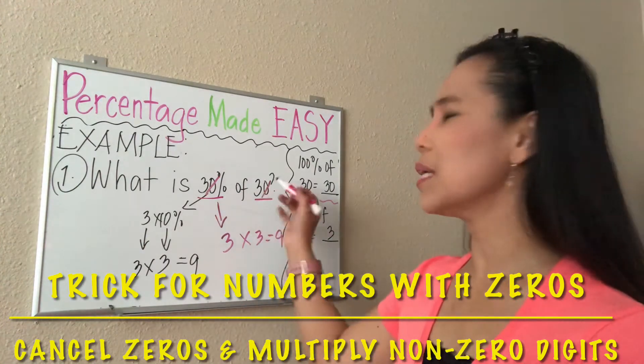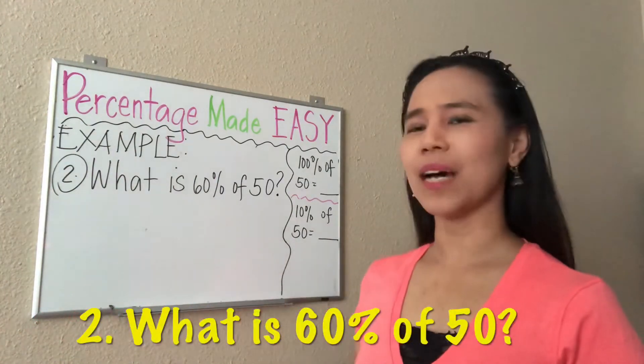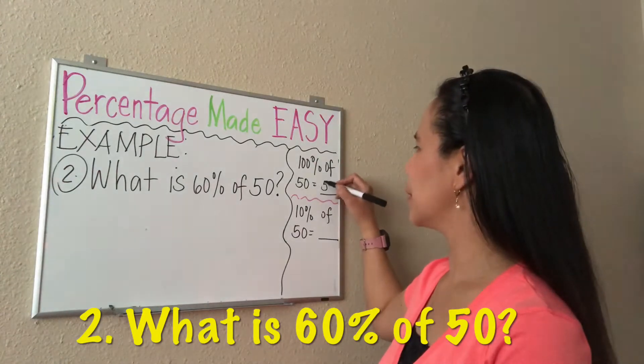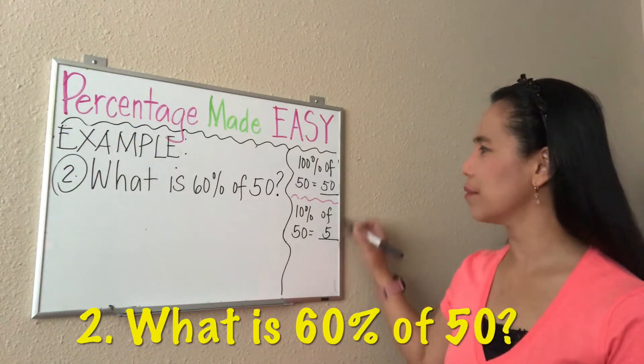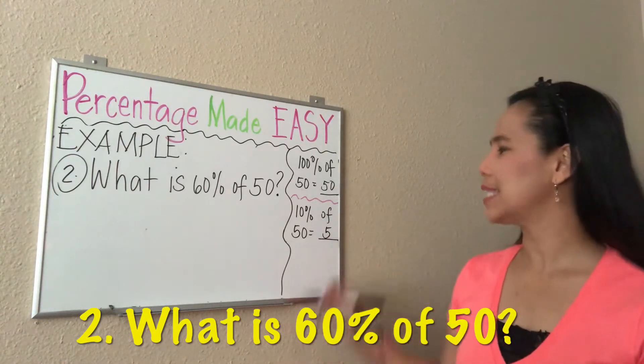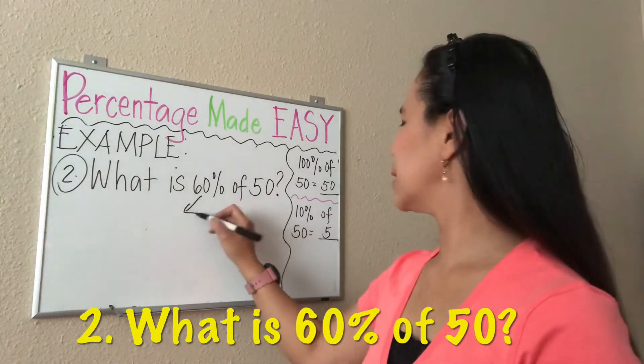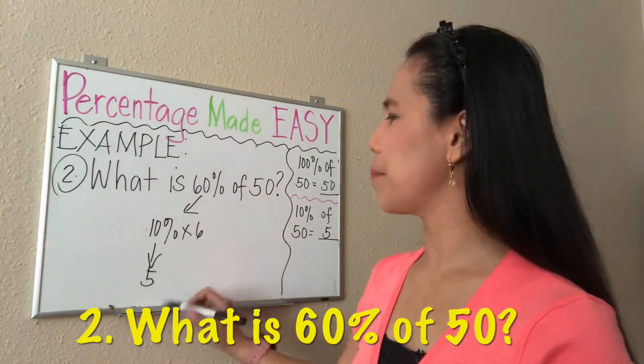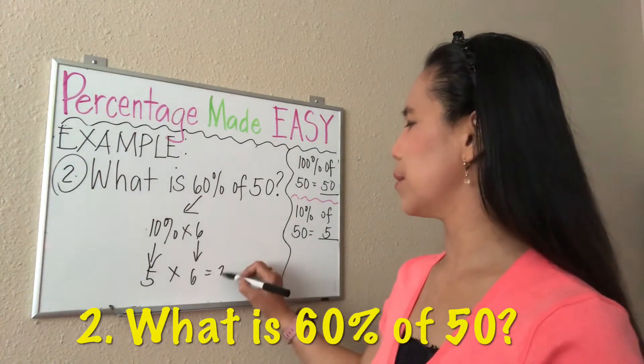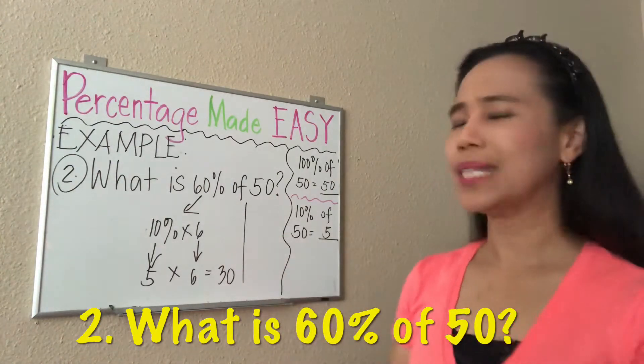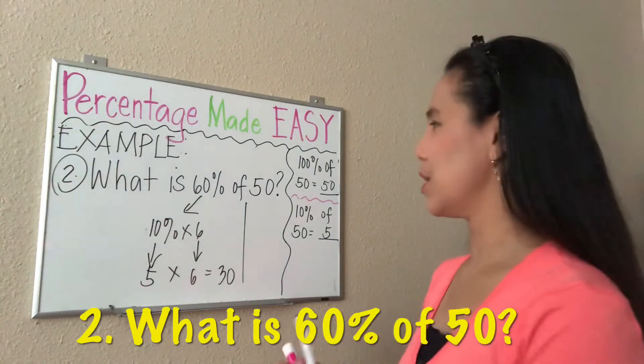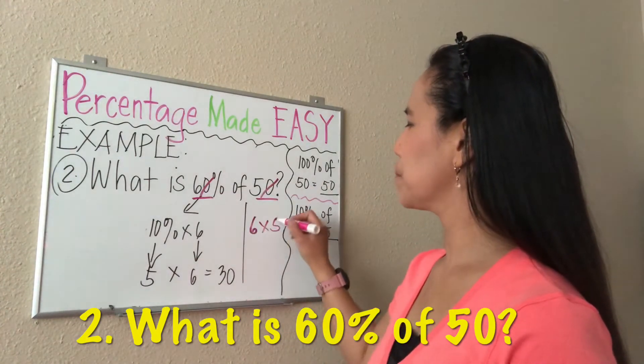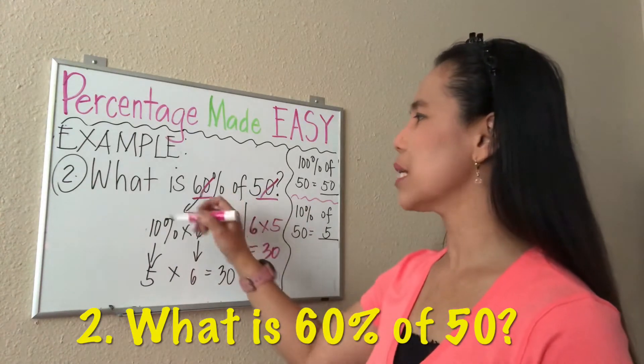Let's have this second example: what is 60% of 50? Again applying what we learned, 100% of 50 is 50, and 10% of 50 is 5. Now 10% of 50 is 5, so that means 5 times 6 gives us 30. If you apply the second strategy, since they both have zeros, we can just cancel the zeros—6 times 5 gives us 30. So the answer to what is 60% of 50 is equal to 30.